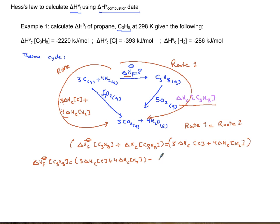Rearranging to isolate delta H formation by subtracting delta H combustion of propane from both sides, and if you plug in your values, you are going to get negative one hundred and three kilojoules per mole.